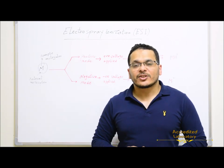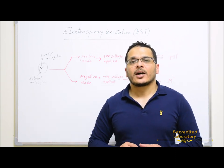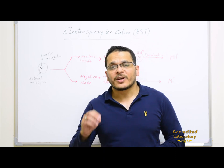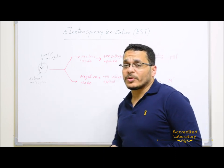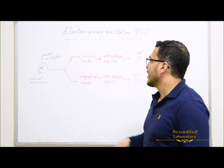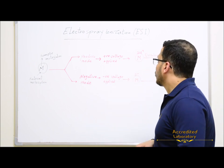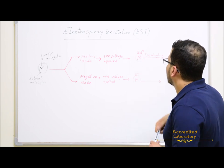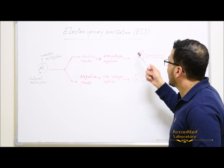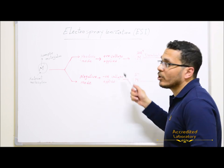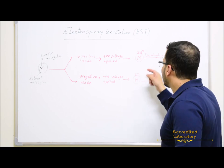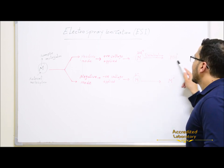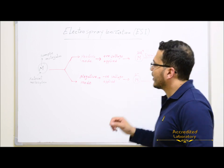Electrospray ionization is a soft ionization technique because there is no fragmentation inside the ion source — only ionization to get precursor ions. These precursor ions are transferred to the mass analyzer to be fragmented and get product ions. In positive mode, positive voltage is applied on the capillary to ionize the sample molecules, forming molecules surrounded by solvent molecules plus H-positive. In negative mode, negative voltage is applied, giving molecules surrounded by solvent molecules with negative charge. After desolvation, the solvent molecules are evaporated and at the end we get positive or negative ions according to the mode and voltage applied.